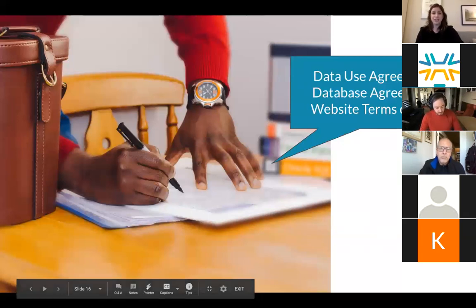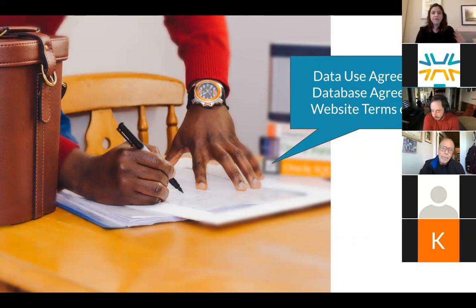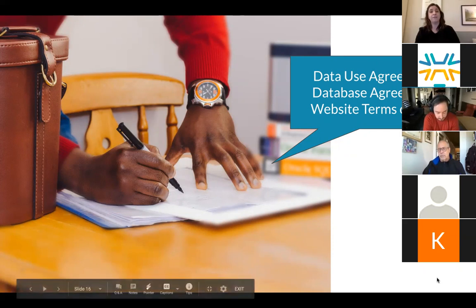Alternatively, maybe you've collected your data from research subjects who provided specific authorizations through data use agreements about how your research data could later be used and disseminated. Or maybe you downloaded content from institutionally licensed databases that have their own terms and conditions, or that were licensed under specific terms from other researchers. All of these are examples of contracts that affect and sometimes circumscribe the choices you can make downstream about how you can share your data.